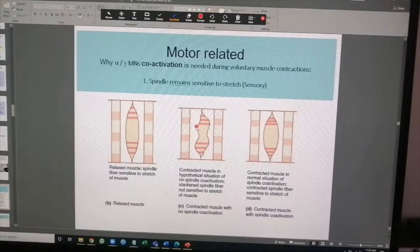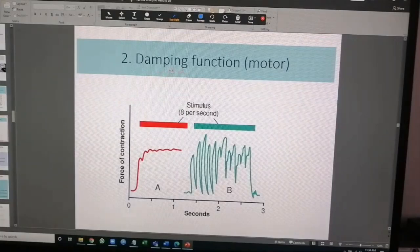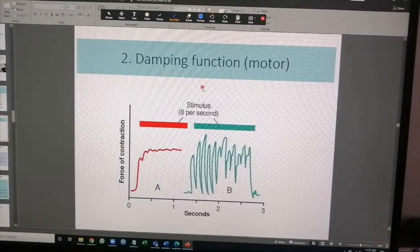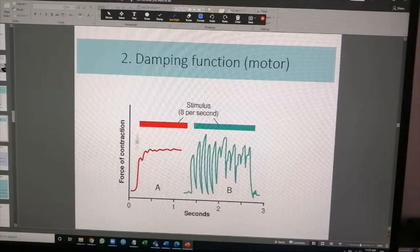The damping function, by the way—the averaging out or damping, it's the same thing. Guyton mentions damping and averaging out. This is a muscle which is stimulated with the muscle spindle intact at an impulse rate of eight per second.